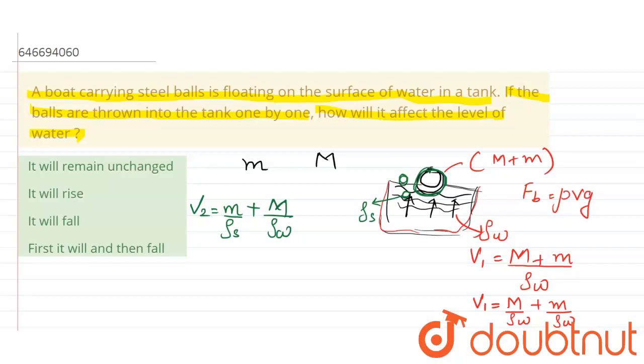Now, as the density of steel is greater than density of water, this will decrease. Therefore V1 is greater than V2 - initial volume is greater than final volume.